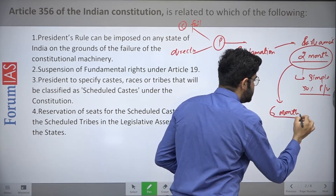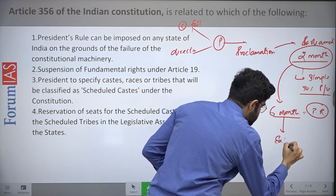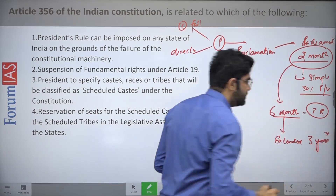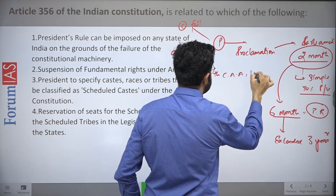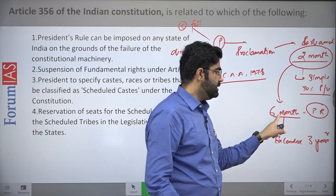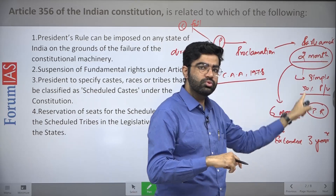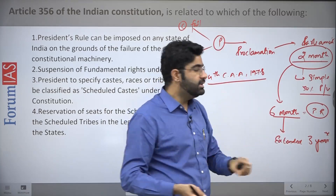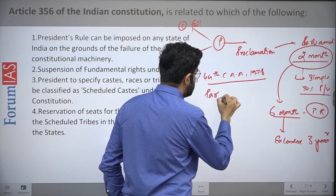Once approved, President's Rule is imposed for a period of six months. This can be extended to a maximum of three years, but after the 44th Constitutional Amendment Act of 1978, a condition was applied: Parliament can approve it six months at a time. Every six months the proclamation goes back to Parliament for approval again.